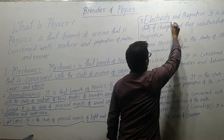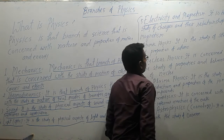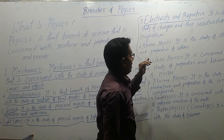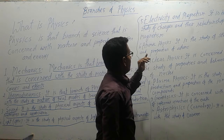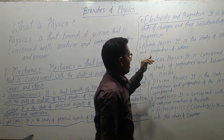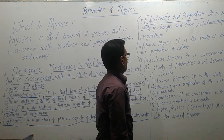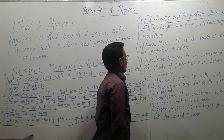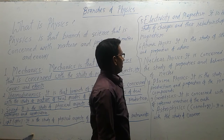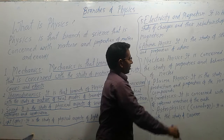In serial number five is electricity and magnetism. What do we study in electricity and magnetism? It is the study of charge and their relationship with magnetism.